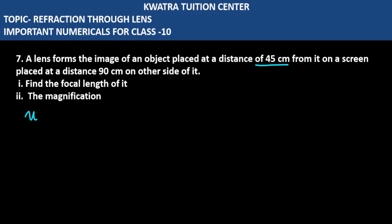What does object distance mean? V is also given, but what is U? What is negative? Because it is on the left side of it, which is minus 45 cm. And what is on the other side? What is 90 cm on the screen? The screen is on the other side of it.